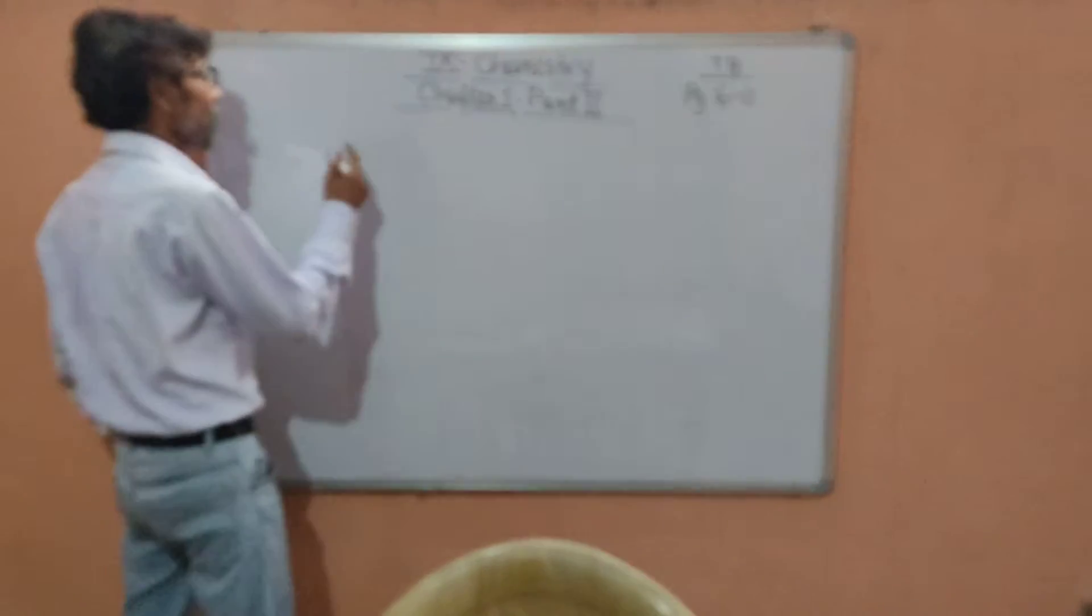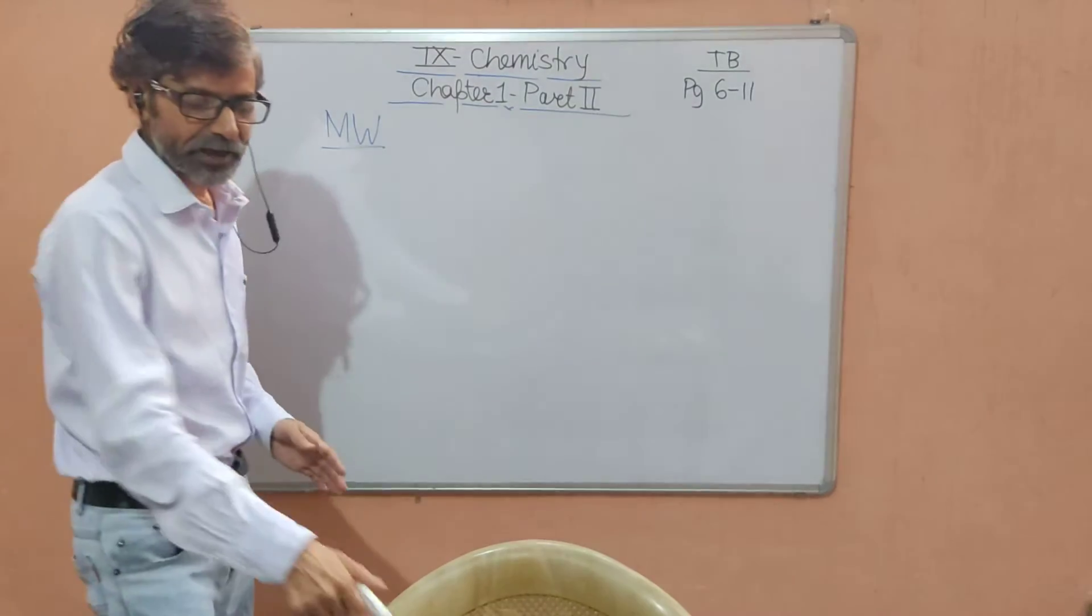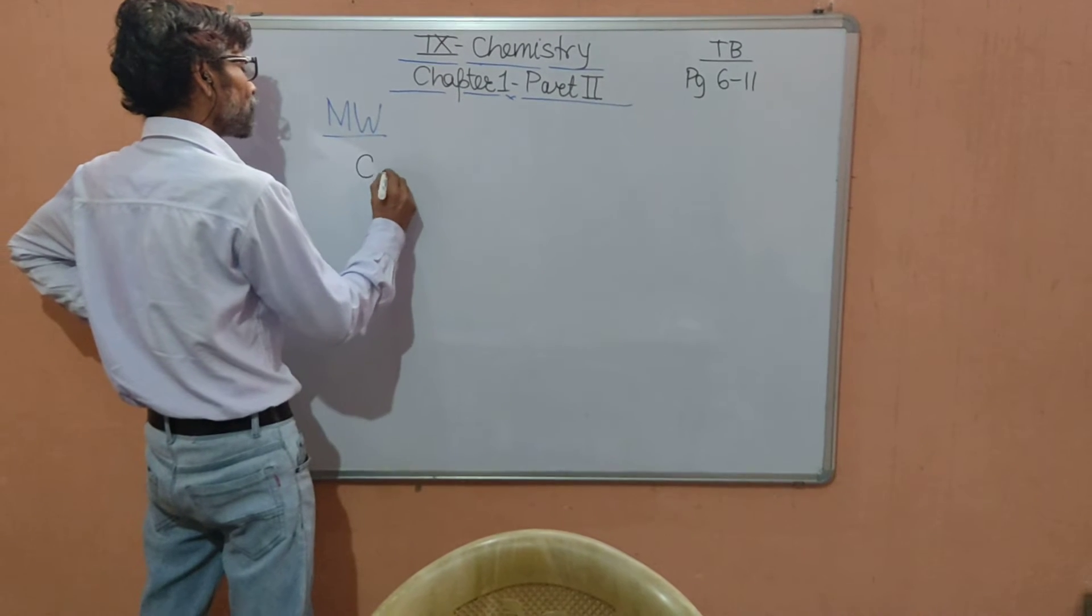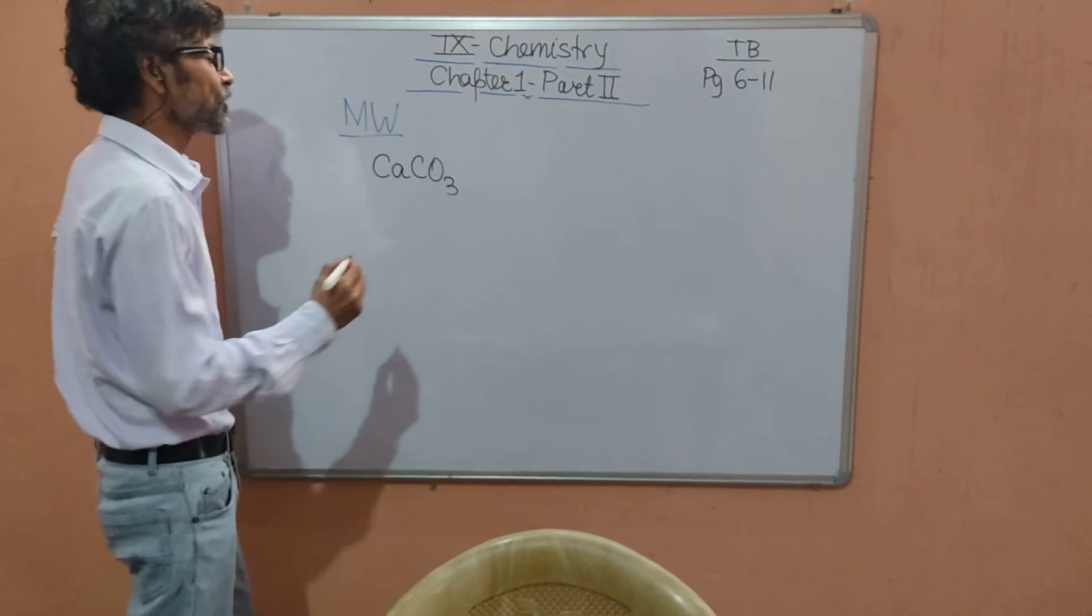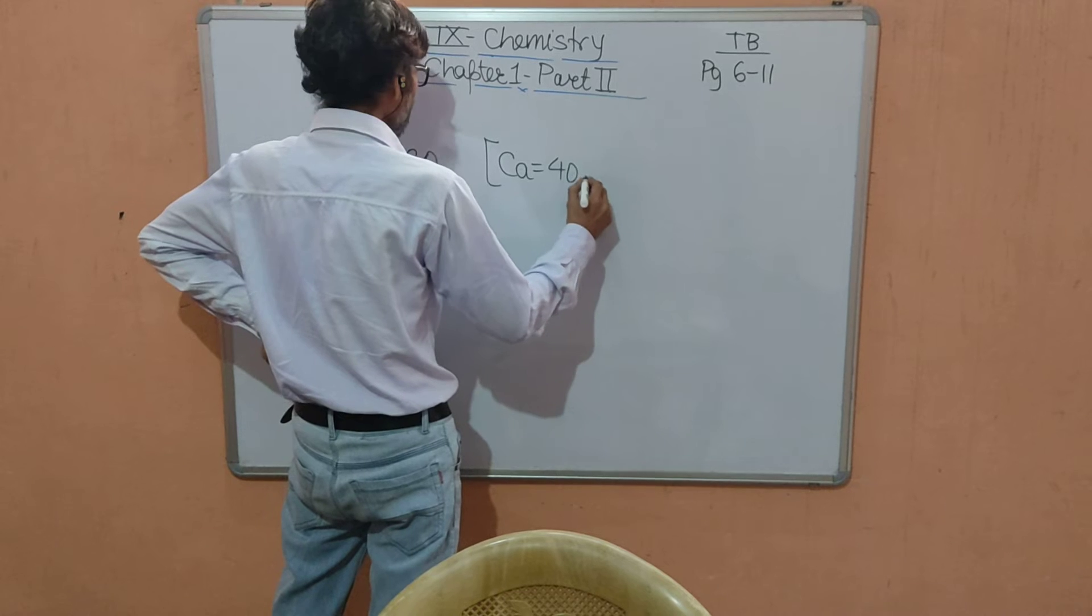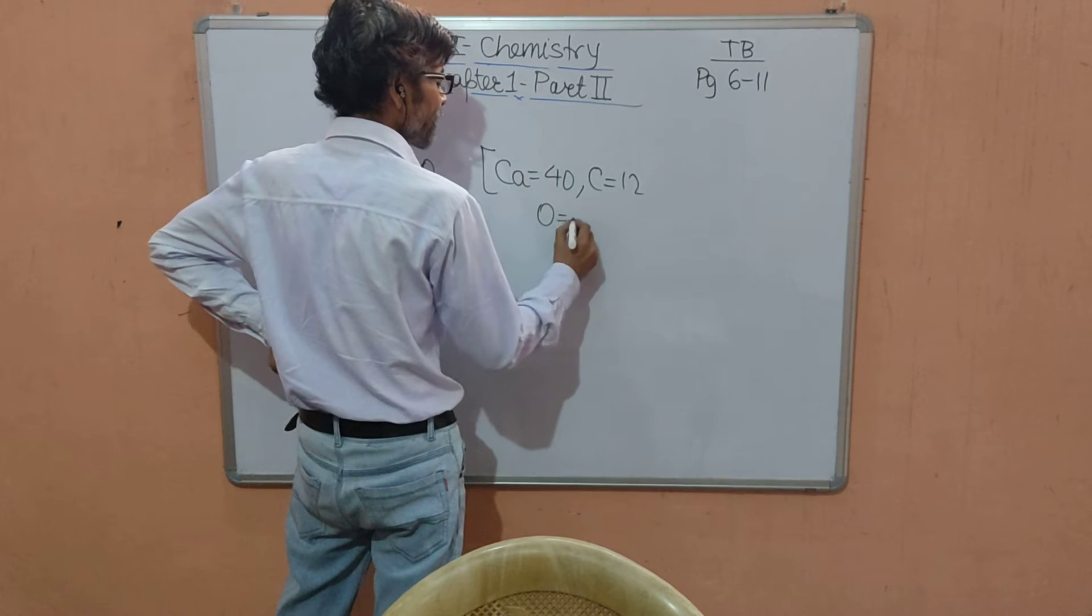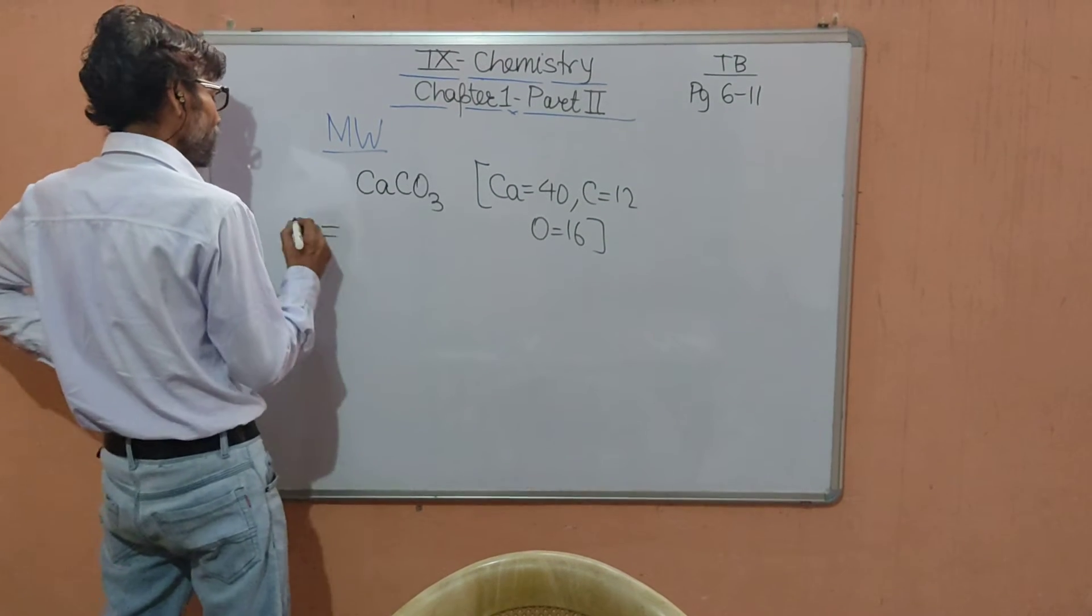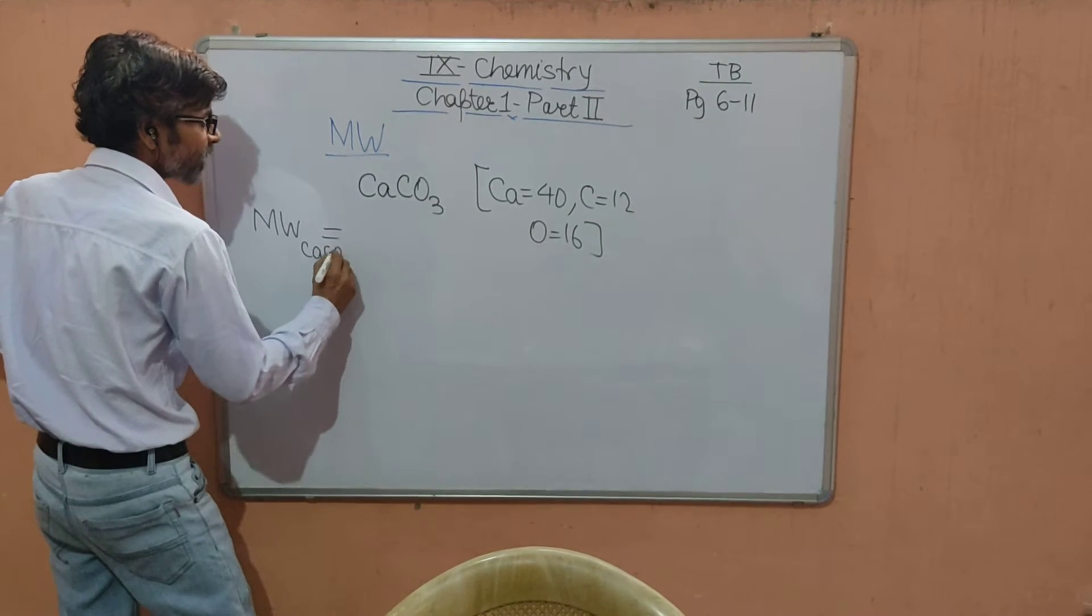However, here my target today is to talk about how to calculate the molecular weight. Students, calculation of molecular weight is very very easy. The only thing again, you have to be systematic. Like here, you are going to find the molecular weight of calcium carbonate, CaCO3. You require the data. Data will always be provided to you: calcium 40, carbon 12, and oxygen 16.